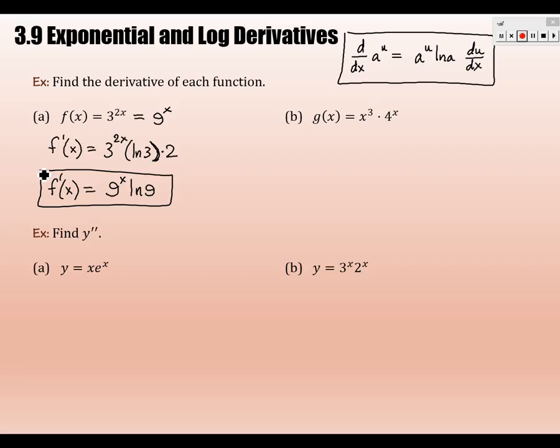Down here, we're finding Y double prime, right? That's what I'm asking. Anyone have a helpful rewrite for B down here? Huh? What is it? Yeah, 6^x. It would make your life a lot easier, wouldn't it? I mean, otherwise, you're doing a product rule. You have to do it again.